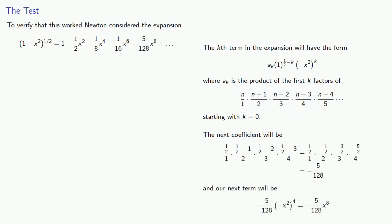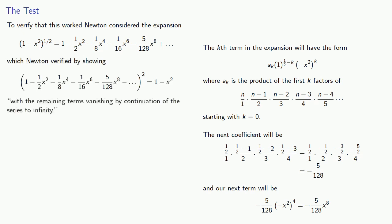And Newton verified that this was actually the case by considering what happens when we square the series. And if we do that, we find we do get (1 - x²), with the remaining terms vanishing by continuation of the series to infinity. In other words, while if we do this expansion, we do get additional terms... If we include the next term of our series, we'll eliminate some of these extra terms.